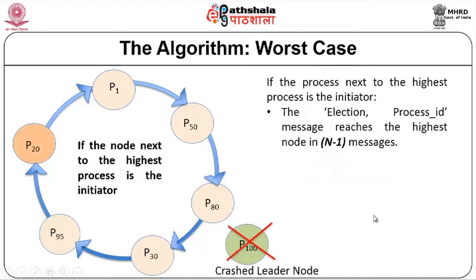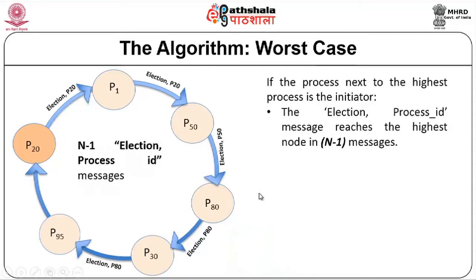The worst case in the ring-based election algorithm is when the node next to the highest node realizes the leader has failed. In this case, if P100 was the leader and has crashed, and P20 becomes the initiator, P95 will be the next coordinator. P20 sends 'election, P20'; P50 changes it to 'election, P50'; P80 changes it to 'election, P80', and so on until reaching the actual highest node. By this point, we have already spent N-1 messages.